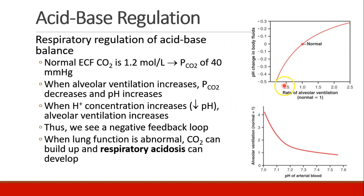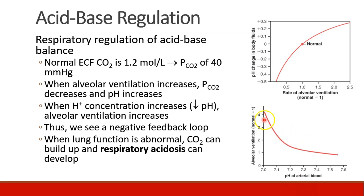This graph shows that as your rate of alveolar ventilation increases, your pH increases as you become more alkalotic. As your ventilation goes down, your pH decreases and you become more acidotic. As the pH of your blood decreases and becomes more acidotic, your ventilation goes up. And as pH increases and becomes more alkalotic, your ventilation goes down. So when lung function is abnormal, CO2 will build up and patients develop respiratory acidosis.